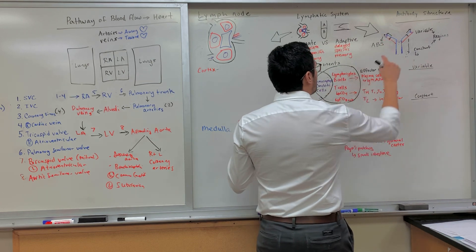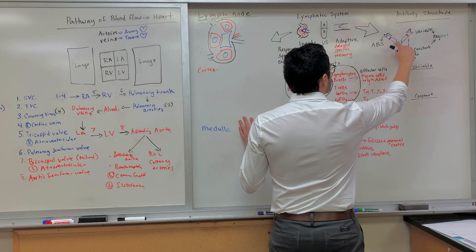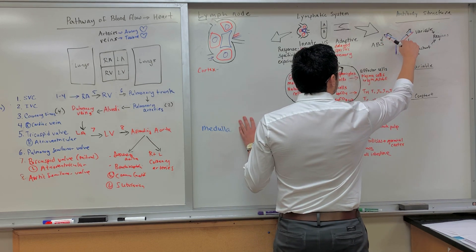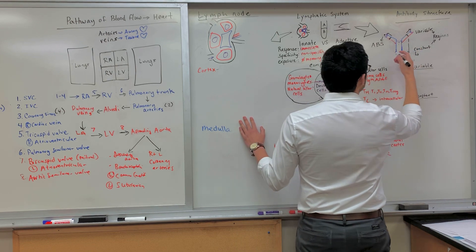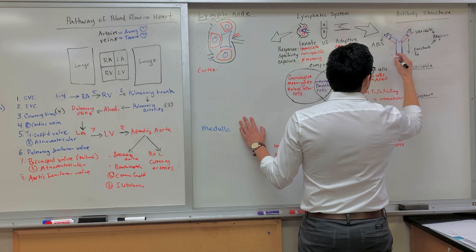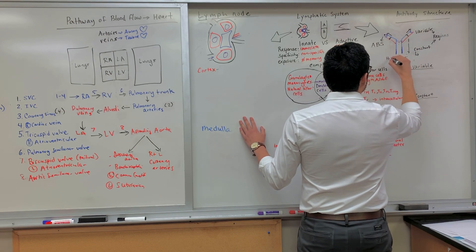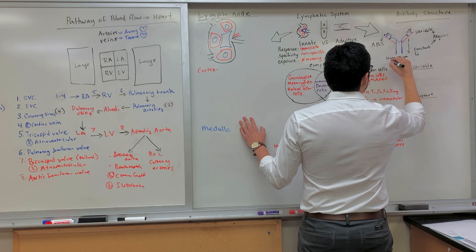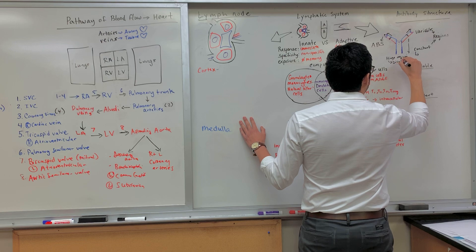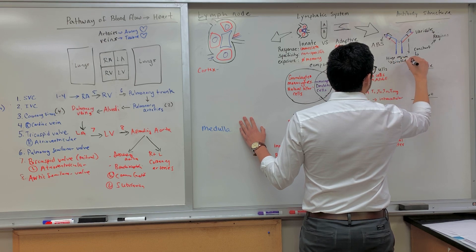Some of the other features: this squiggly line here in purple is what's known as the hinge region. At the hinge region, there is a disulfide bond that connects them together.